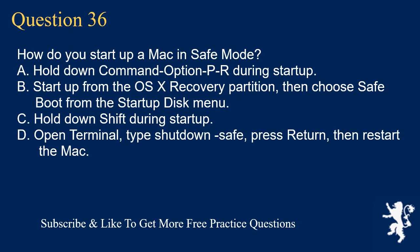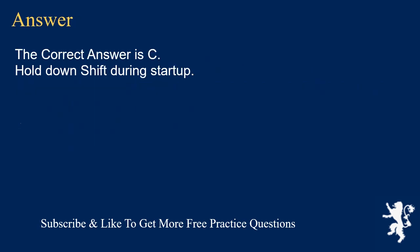Question 36. How do you start up a Mac in safe mode? A. Hold down Command Option P R during startup. B. Start up from the OSX recovery partition, then choose Safe Boot from the Startup Disk menu. C. Hold down Shift during startup. D. Open Terminal, type 'shutdown safe', press return, then restart the Mac. The correct answer is C: Hold down Shift during startup.